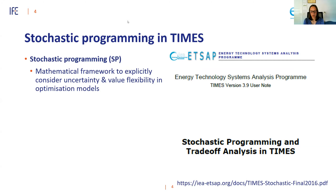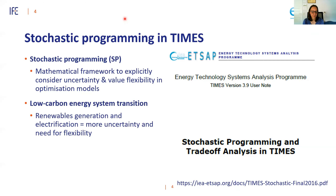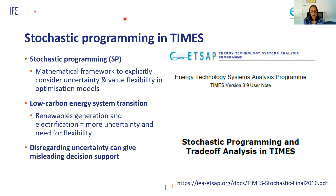Stochastic programming has been part of the TIMES code for many years now, and it is documented in a report available on the ETSAP web page. It is a framework to explicitly consider uncertainty and to value flexibility in optimization models like TIMES models. In the low carbon energy transition with more intermittent renewables and a higher degree of electrification, there is more uncertainty related to ensuring that electricity supply meets electricity demand. If we disregard this uncertainty, it can give misleading decisions. But this depends on the analysis we do and the methods we use.